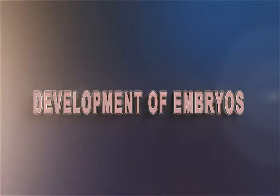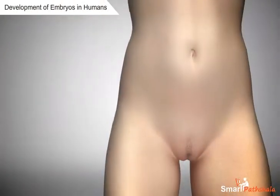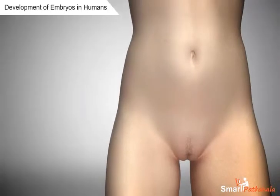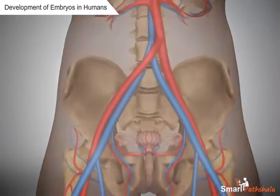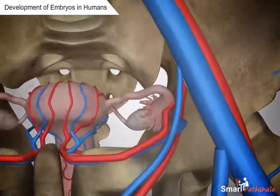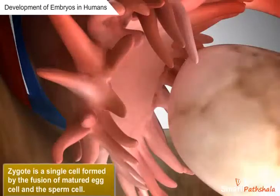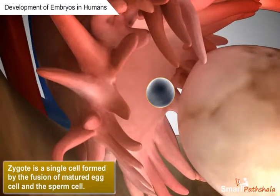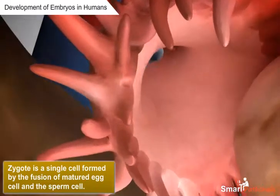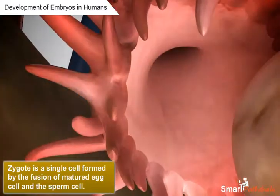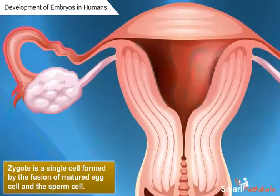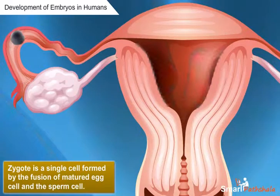Let us learn about development of embryos in humans and hens. In humans, as a result of fertilization which occurs in fallopian tubes, a zygote is formed. This zygote is the single cell formed by the fusion of a matured egg cell and the sperm cell. This zygote divides repeatedly to give rise to a ball of cells which further form into groups, and these groups will develop into different tissues and organs of the body. This developing structure is called an embryo.